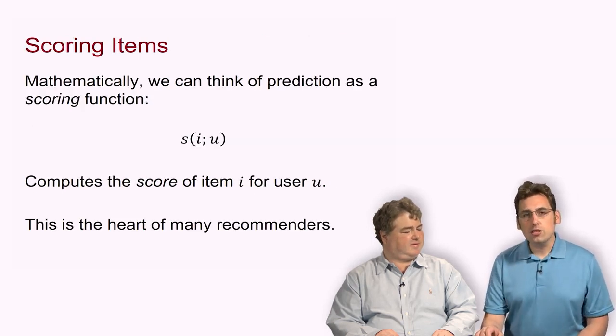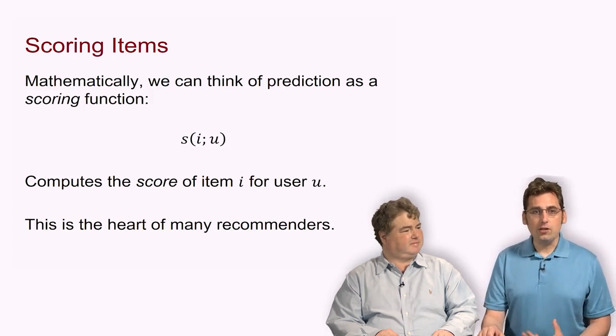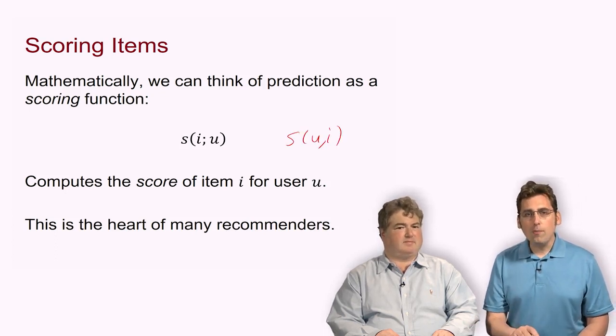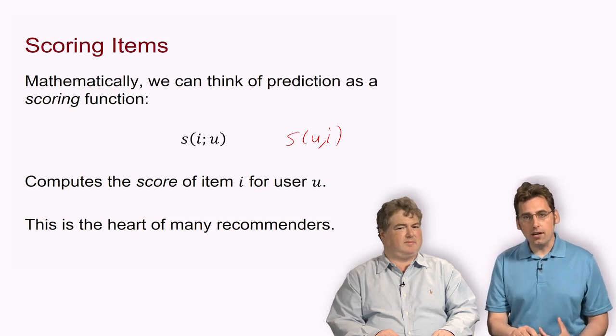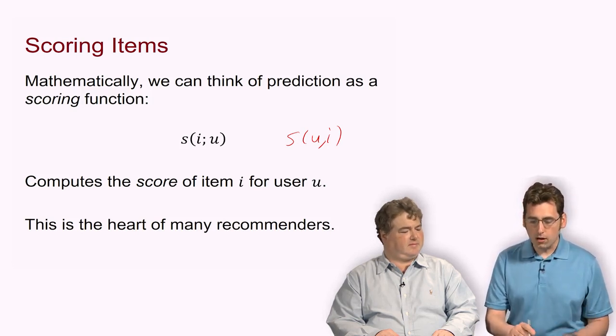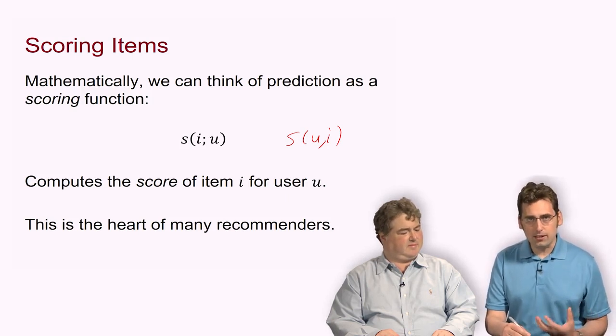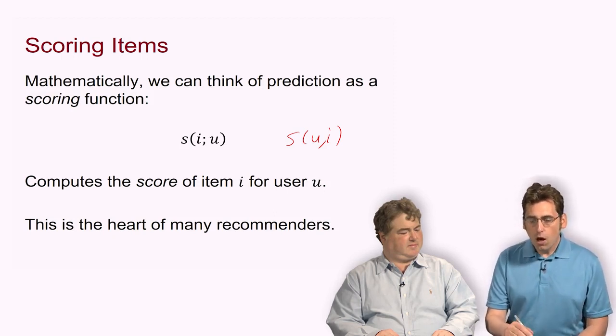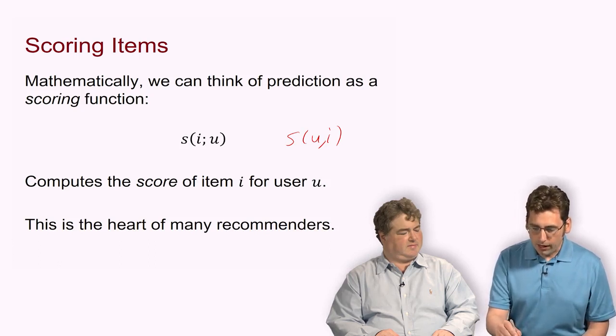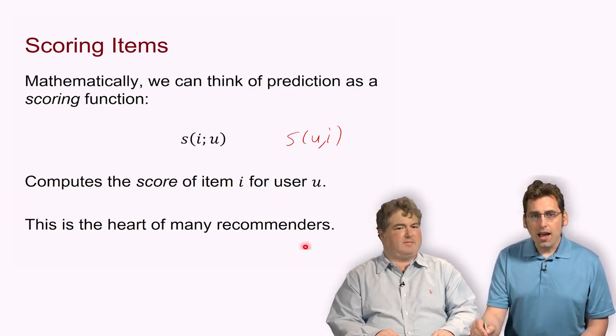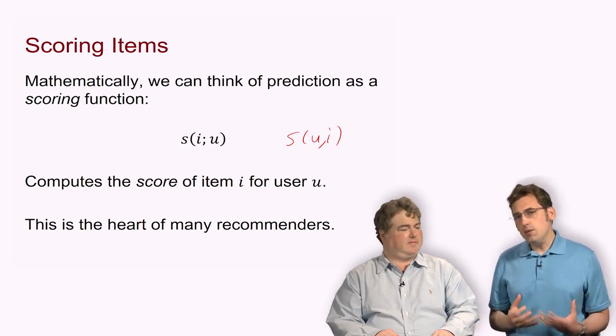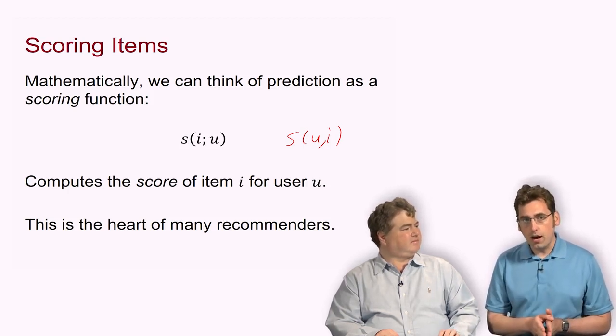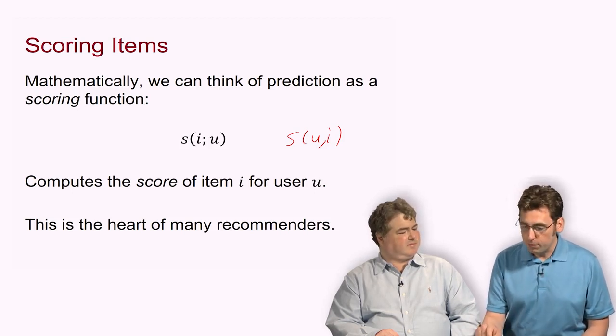Mathematically, we can think of prediction as a scoring function, S of i given u. Sometimes we're going to write this as S of u i. That produces a score for a particular item with respect to some user. The difference between the semicolon and the comma is not mathematically meaningful. This function computes the score of an item i for a user u, and this kind of scoring function is at the heart of many recommenders.